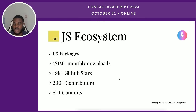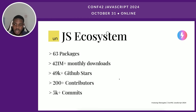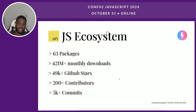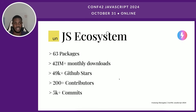The UnJS ecosystem is made up of about 63 packages. They have about 421 million-plus monthly downloads on npm, over 49,000 GitHub stars, 200-plus contributors, and over 5,000 commits across all of the packages in the ecosystem. The UnJS ecosystem is pretty huge, and it keeps growing every day.